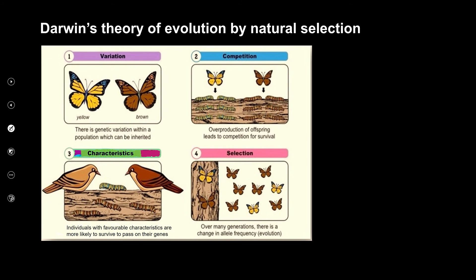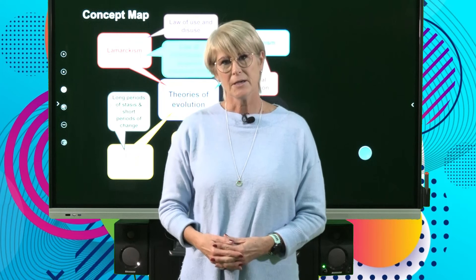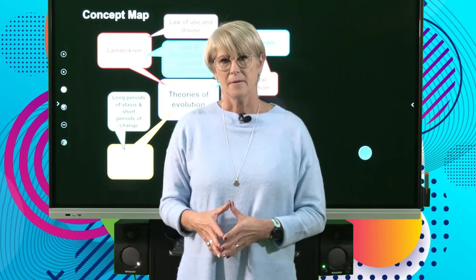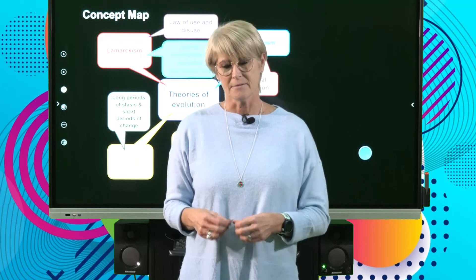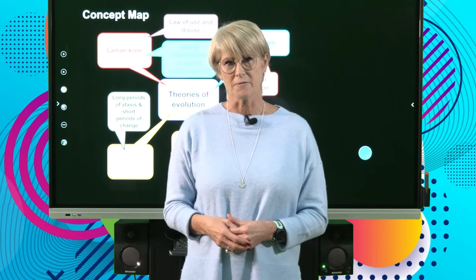To quickly sum up Darwin's theory of natural selection: his four observations were that there was variation in a population, this led to competition, there were certain characteristics that were favorable and unfavorable, and then the favorable characteristic would be selected — and that is how natural selection works. Let's take a break.